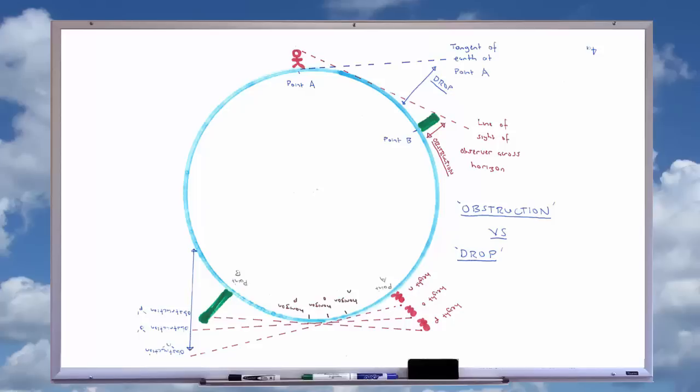However, this assumption does not generally work in practice because even on the ball earth model the earth is not perfectly spherical. There are waves on water, bumps on the ground, etc.